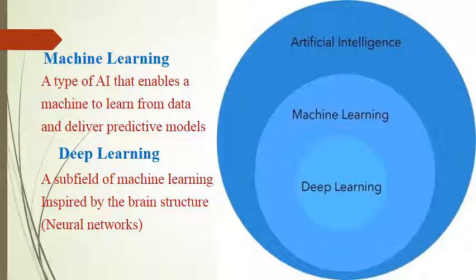Artificial Intelligence is the main umbrella, and under it there are many other fields, including machine learning and deep learning. Machine learning is the type of AI that enables a machine to learn from data and deliver predictive models, working on training data to give solutions. Deep learning is a subfield of machine learning, inspired by brain structure and how the brain works — these are the form of neural networks.